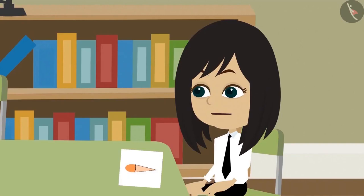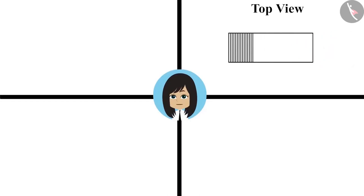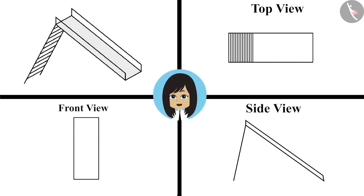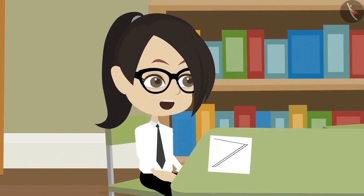Absolutely right. Now I will try and guess. Its top view is a rectangle. Its front view is also a rectangle. It can be a box. Now after seeing its side view I will tell you what it is. Hey, its side view is like a swing in our park. This means it is a drawing of a swing. This was tough. This was fun.